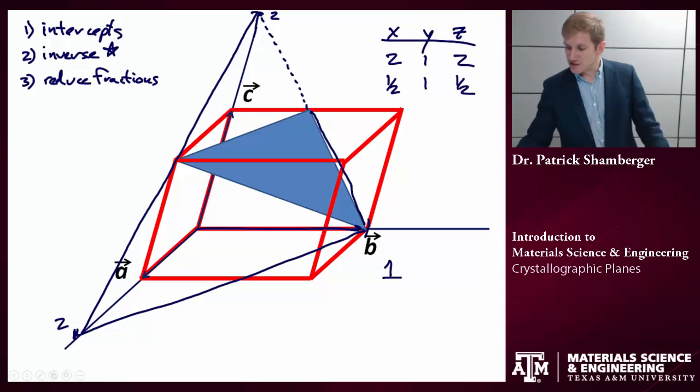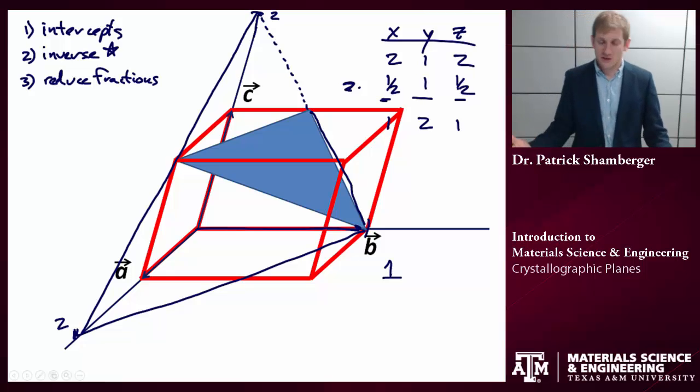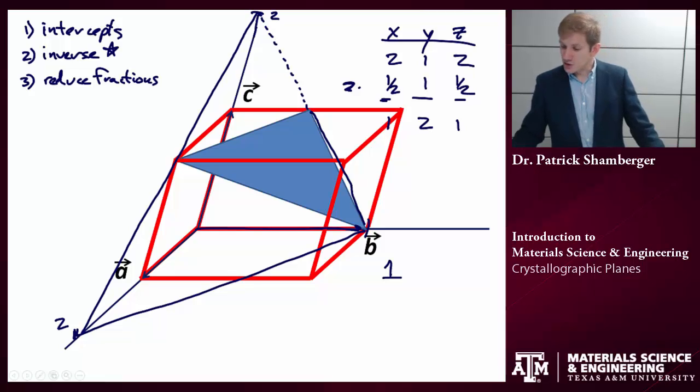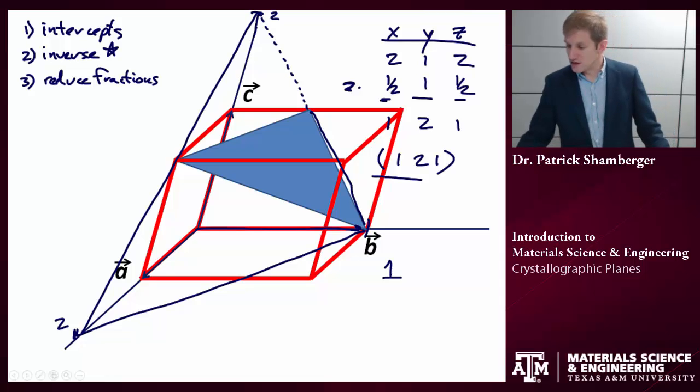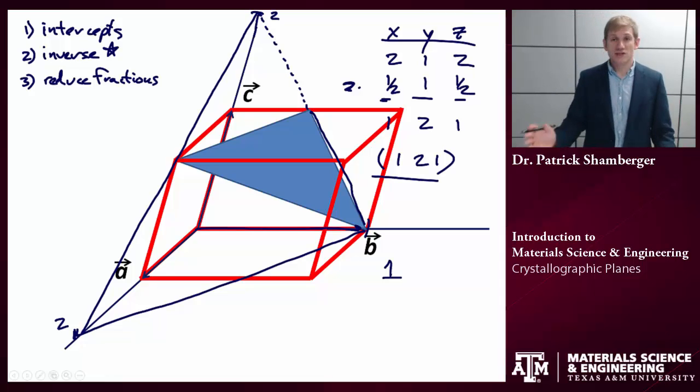The third step is to reduce the fractions. So here we see fractions. I'm going to multiply this all through by two. And I'm going to get one, two, one. So I have to multiply all three of these numbers through by the same number in order to reduce the fractions. And if I were to write this in the standard Miller notation for planes, that is (1 2 1). I don't use commas, and I use round parentheses. So a single plane is described by round parentheses. So these are the Miller indices of this particular plane.